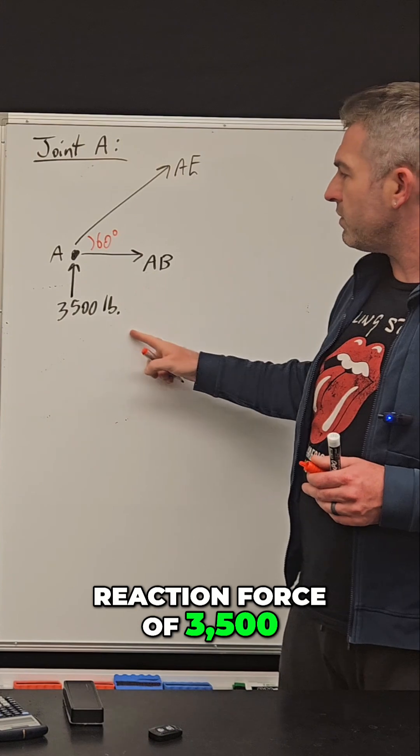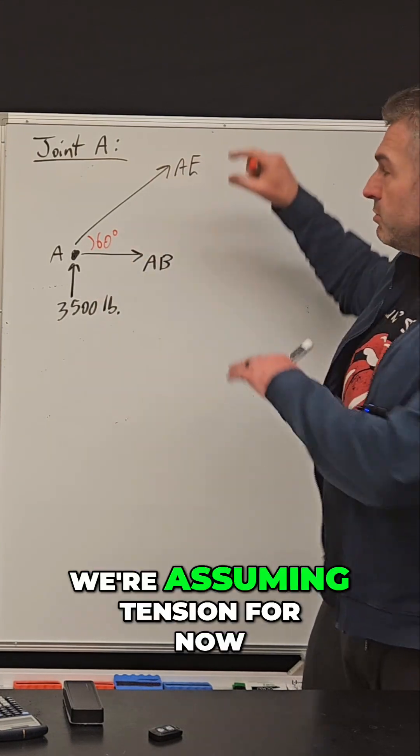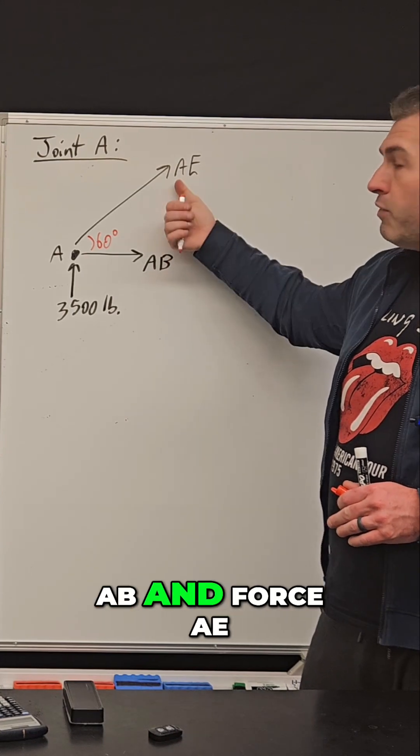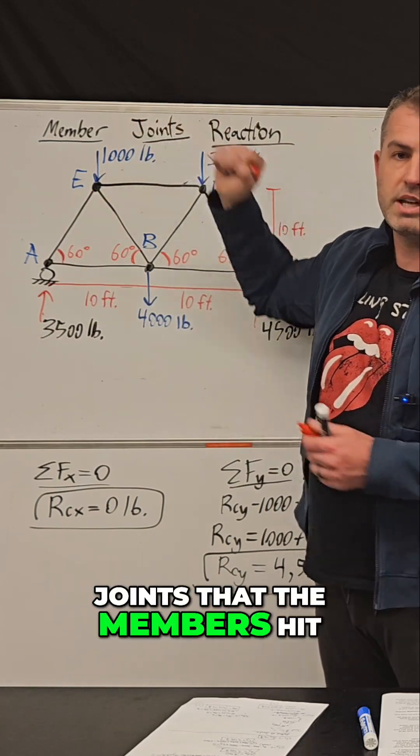Joint A has a reaction force of 3,500 pounds and it has two member forces pulling away from the joint. We're assuming tension for now, so we're going to call those forces force AB and force AE. They signify the letters of the two joints that the members hit.